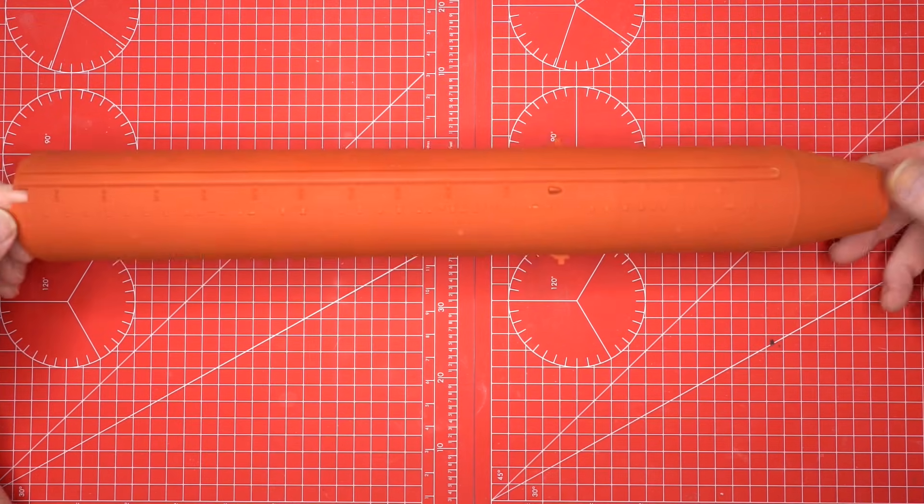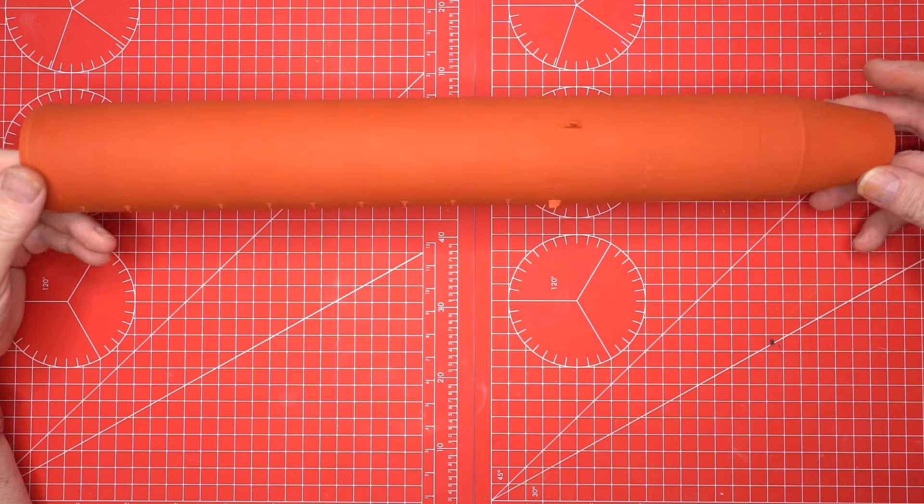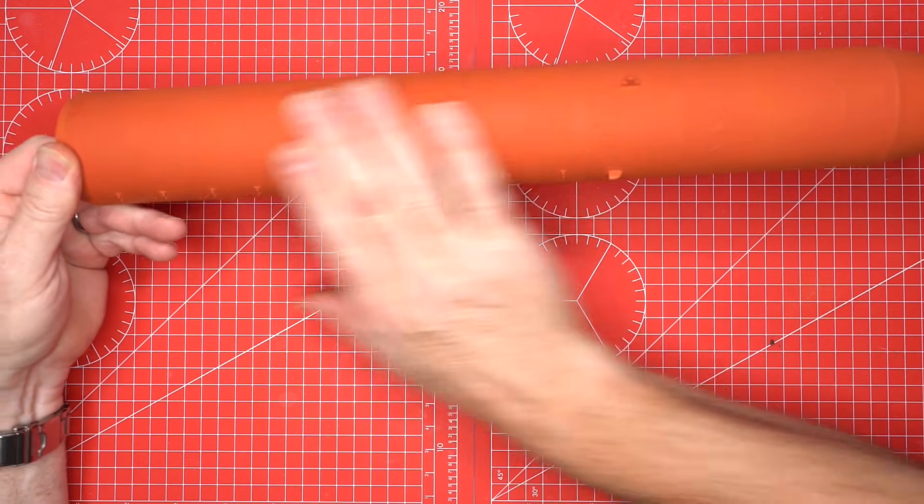Now we can paint the darker orange that defines the real rocket's cryogenic tank. Once the shade is even, we seal it with a satin lacquer to protect the paint during later handling.